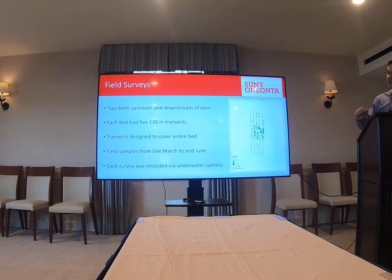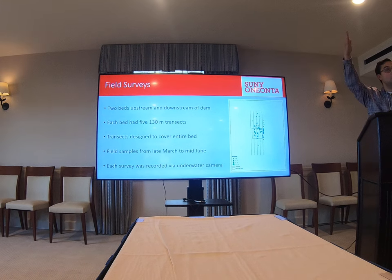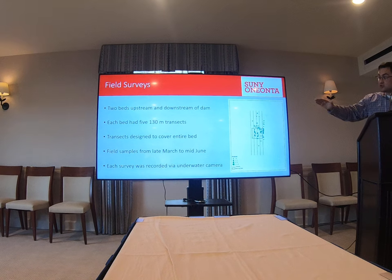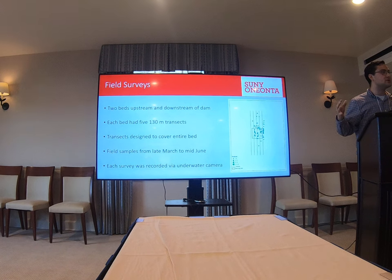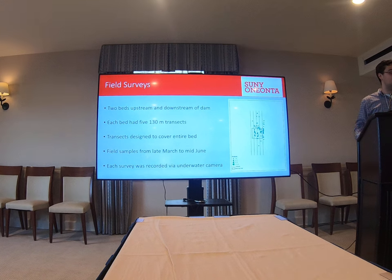Each bed has five 130-meter transects, as you can see in my graphic. The square between those lines represents the spawning beds, and each of those long lines represents the transects the boat followed to monitor sturgeon. Transects one and five — on the very ends — are not on the spawning beds at all. This is done on purpose to widen the sampling area rather than getting a very precise look at the spawning bed.